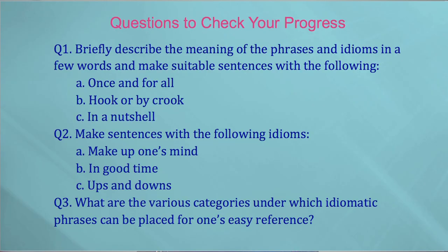Now we come to the questions to check your progress. You are advised to go through the presentation once again so as to grasp the entire content in a better manner. Question one: Briefly describe the meaning of the phrases and idioms in a few words and make suitable sentences with: A. Once and for all, B. By hook or by crook, C. In a nutshell. Question two: Make sentences with — A. Make up one's mind, B. In good time, C. Ups and downs. Question three: What are the various categories under which idiomatic phrases can be placed for one's easy reference?